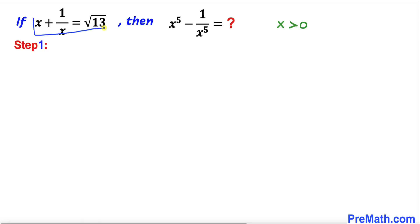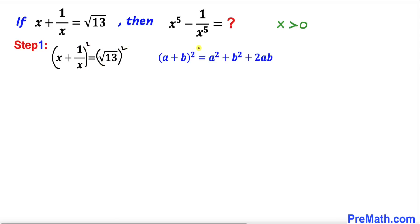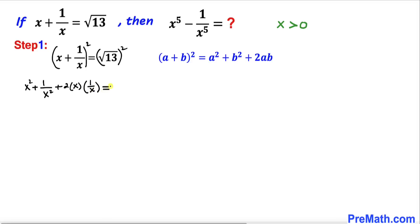Here's our very first step. Let's focus on this given equation. Let's go ahead and square both sides of this equation. Now let's recall the famous identity (a + b)² — we are going to apply it on the left hand side, where a equals x and b equals 1 divided by x. So the left hand side becomes x² plus 1 divided by x² plus 2 times x times 1 over x, and the right hand side — the square and square root undo each other — giving us 13.